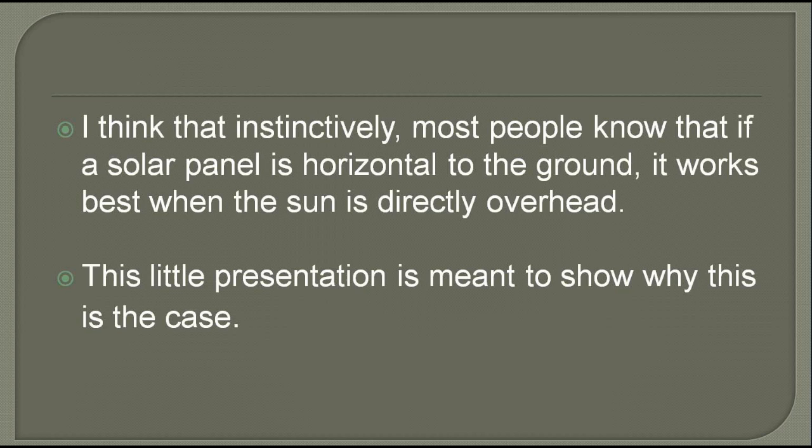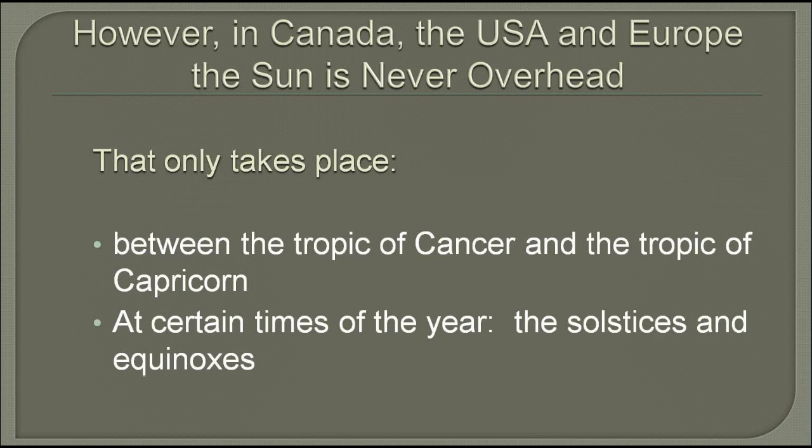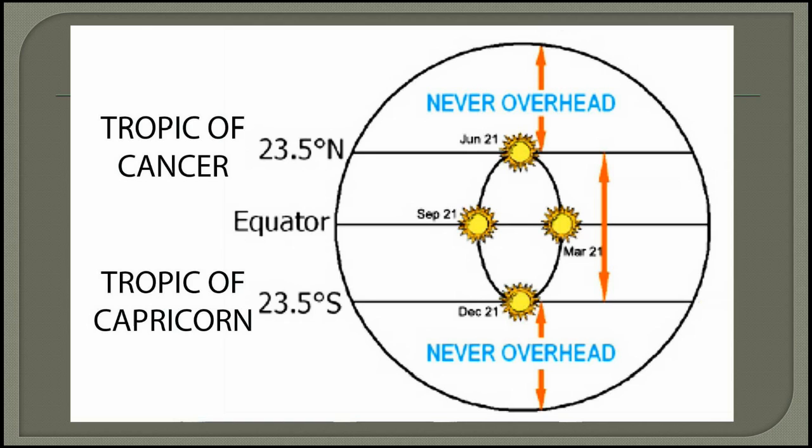However, in Canada, the USA and Europe, the sun is never overhead. This can only take place between the Tropic of Cancer and the Tropic of Capricorn at certain times of the year — the solstices and the equinoxes. This diagram shows that the sun can never be overhead north of the Tropic of Cancer or south of the Tropic of Capricorn.